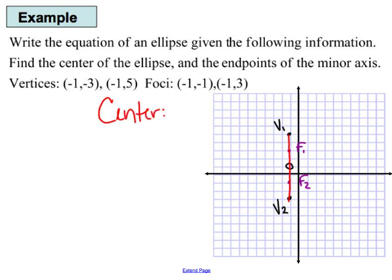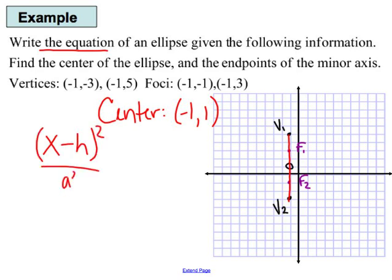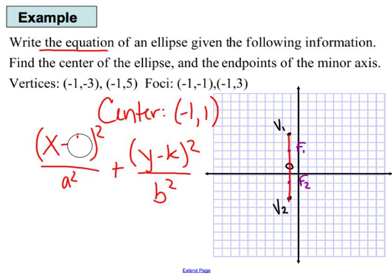I can see the center is at negative 1, 1. That's going to help me write the equation, because the standard form is x minus h squared over a squared plus y minus k squared over b squared equals 1. I know h is negative 1 and k is positive 1, so the equation becomes x plus 1 squared over a squared plus y minus 1 squared over b squared equals 1.